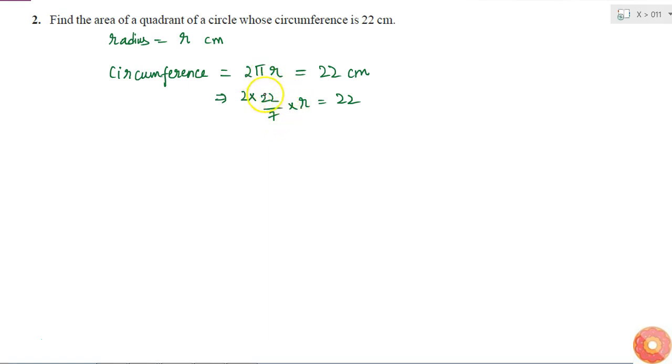So this means that if I cancel 22 from here and here, I will get 2R is equal to 7, or R is equal to 7 by 2 which is 3.5 cm.